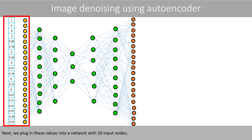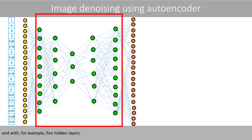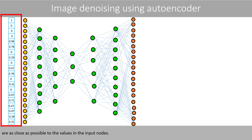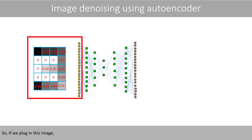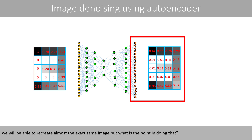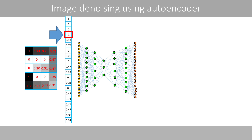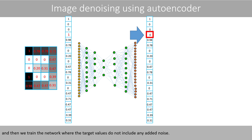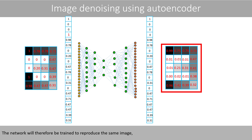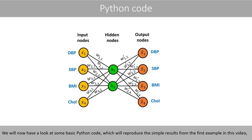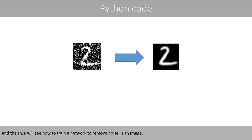Next, we plug in the values into a network with 20 input nodes, and with, for example, five hidden nodes. Then we train this network so that the predicted values from the output nodes are as close as possible to the values in the input nodes. So, if we plug in this image, we will be able to recreate almost the exact same image. Well, suppose that we add some noise in this image, where we, for example, set this pixel to 1. And then we train the network where the target values do not include any added noise. The network will therefore be trained to reproduce the same image, but without the added noise. We will now have a look at some basic Python code, which will reproduce the simple results from the first example in this video, and then we'll see how to train a network to remove noise in an image.